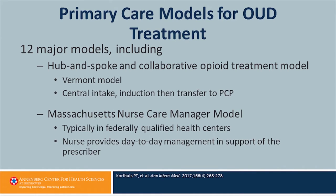Module 5 focuses on strategies to consider in employing a coordinated care model involving primary care providers to decrease the risk of relapse for people with opioid use disorder. There's an excellent review by Todd Kortius in the Annals of Internal Medicine in 2017 that outlined 12 primary care models for opioid use disorder that are in existence.